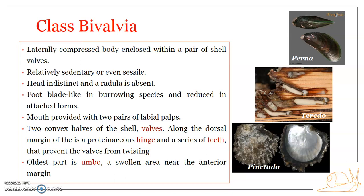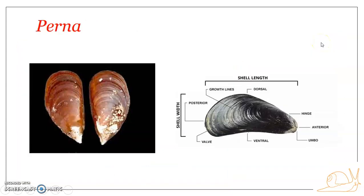The mantle consists of a pair of symmetrical right and left lobes which join the visceral mass dorsally. The dorsal side is where the shell is joined together at the hinge, while the ventral side is opposite. The anterior and posterior regions are also distinct. Between the mantle lobe and the visceral mass is the mantle cavity, which houses the ctenidia or gills.